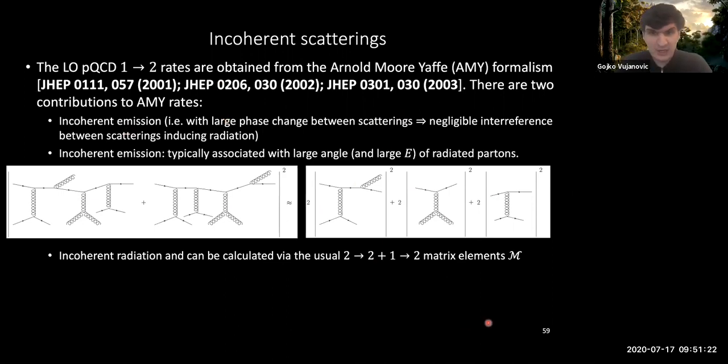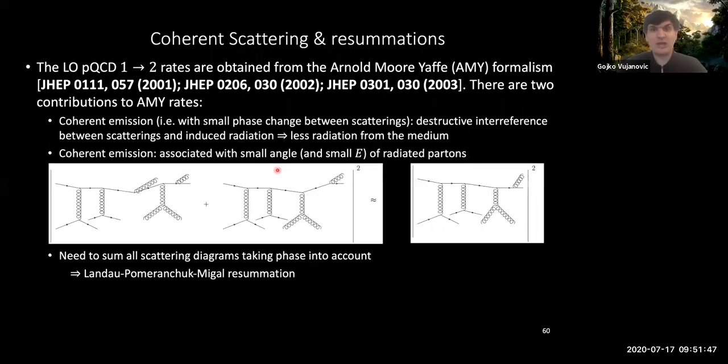And then you can use the usual matrix element that's already described. However, this incoherent approximation, I forgot to mention, this incoherent approximation happens when you really have either large angle or large energy radiation that is present in these radiations here. However, if you have a guy that has radiated at a very, very small angle, or a guy that has a very, very small energy, or virtuality for that matter, if that happens, then it's a question of whether or not the medium can resolve the fact that you had a split or not. And in that approximation, actually, then the interference terms actually become very important. Because you have essentially a small phase change between these radiations.